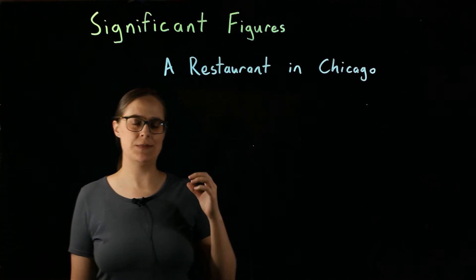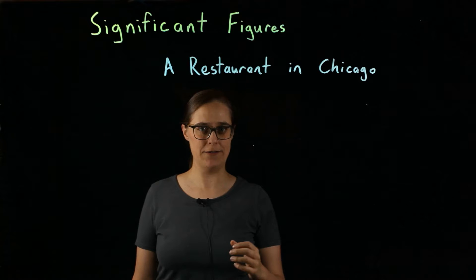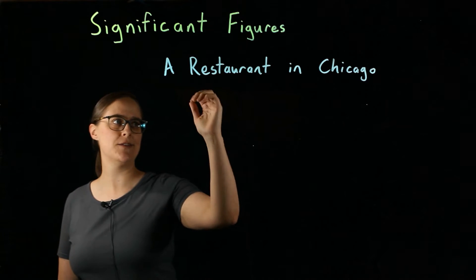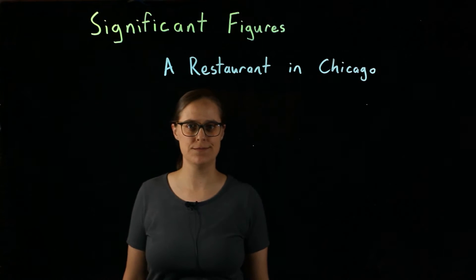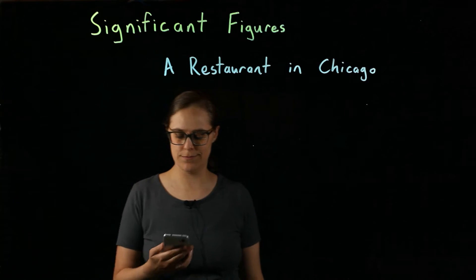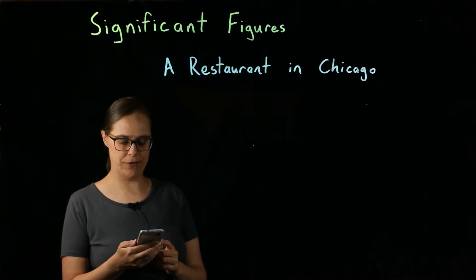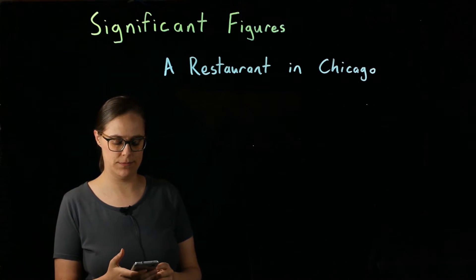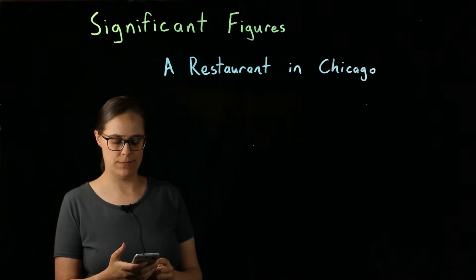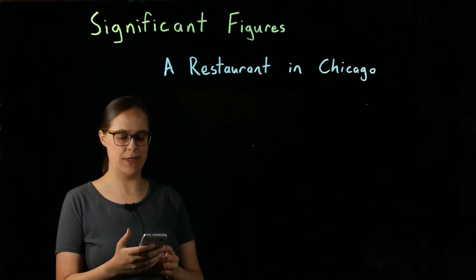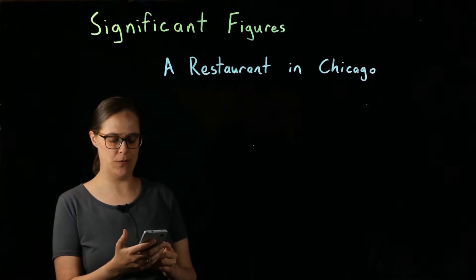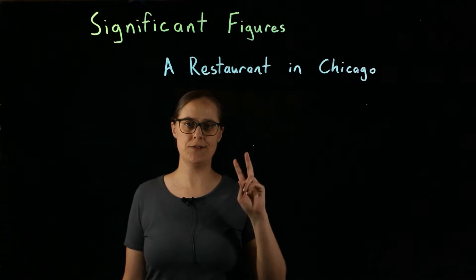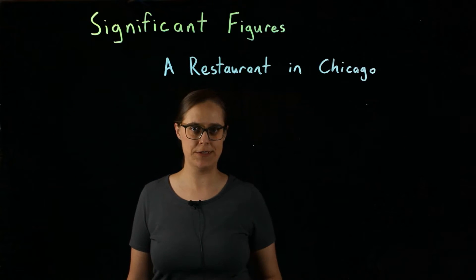So I want to first explain the concept of significant figures without numbers using a real-world example. I'm calling this a restaurant in Chicago. Do you want to grab some lunch? Sure, that sounds like fun. Where do you have in mind? I'm at a restaurant in Chicago. I don't know what it's called. Okay. Which of these two ways makes more sense for me to respond?